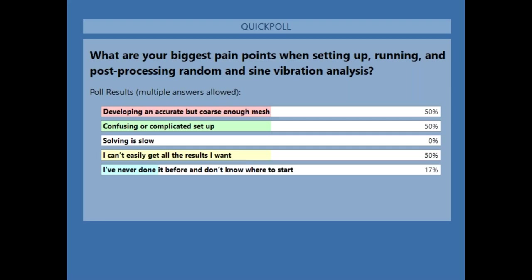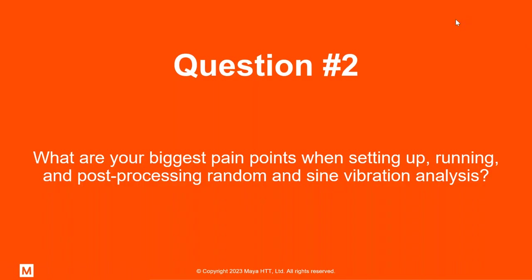All right. Close the poll. We'll share that here. So, developing an accurate but coarse enough model, confusing, complicated setup. Those are pain points I've run into myself for sure. Can't easily get the results you want. Also true. And some people just getting started, getting familiar with Random and Sine Vib. Definitely a lot of the pain points I've seen as well.